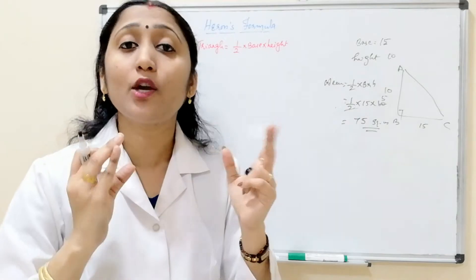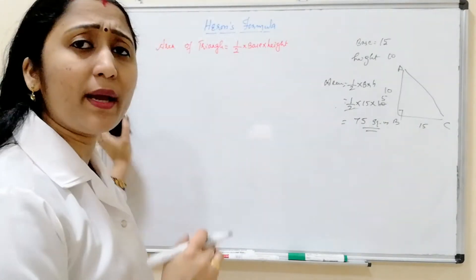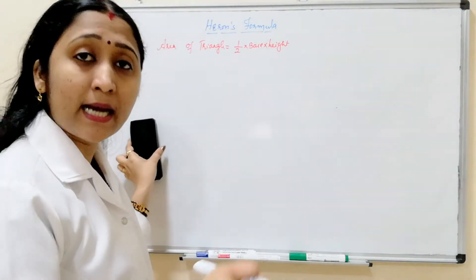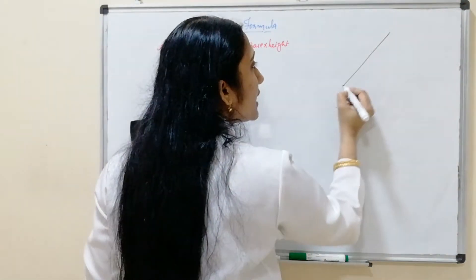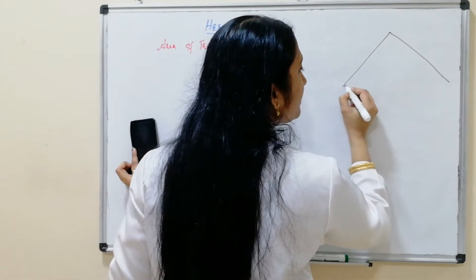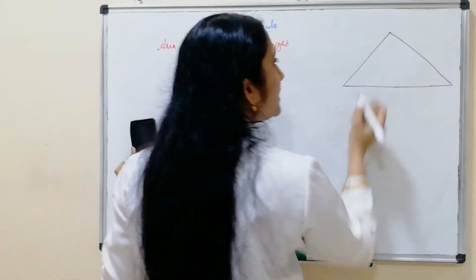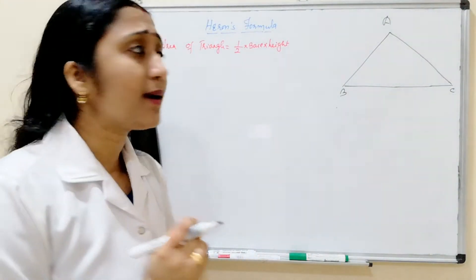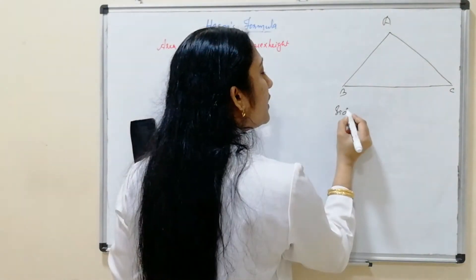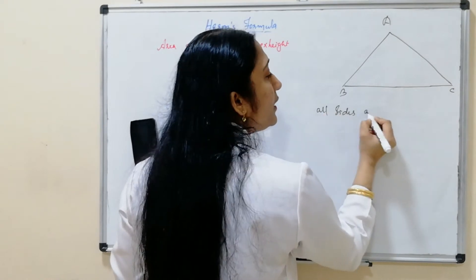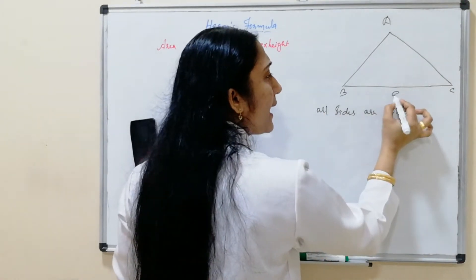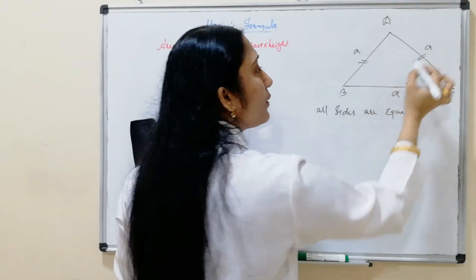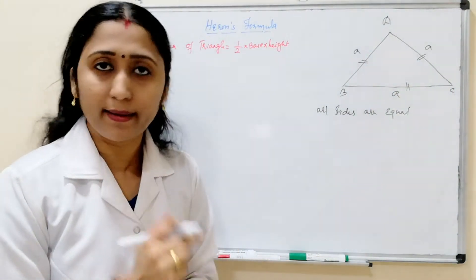Next, moving on to the equilateral triangle. What does equilateral triangle mean? Equilateral triangle means all three sides are equal. This is called an equilateral triangle. So in an equilateral triangle all sides are equal, and we can label them all as A.